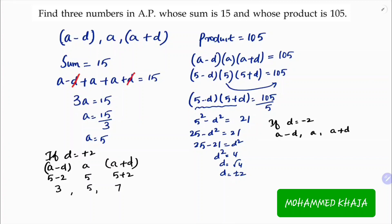A minus D: A is 5 minus 2, which is 3. A is 5. And A plus D: 5 plus 2 equals 7. So it will be like 7, 5, 3. So the three terms are 3, 5, 7 or 7, 5, 3.